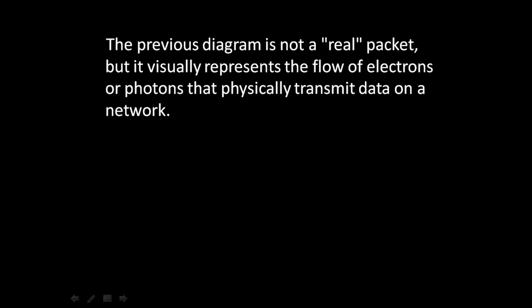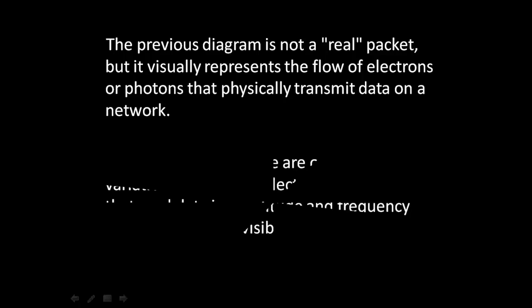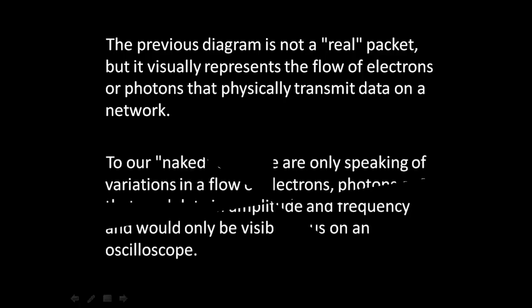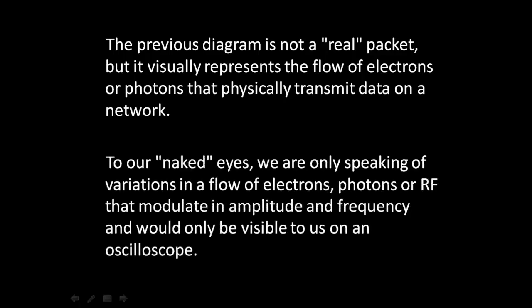The previous diagram is not a real packet, but it visually represents the flow of electrons or photons that physically transmit data on a network. To our naked eyes, we are only speaking of variations from a flow of electrons. Photons are RF that modulate in amplitude and frequency, and would only be visible to us on an oscilloscope.